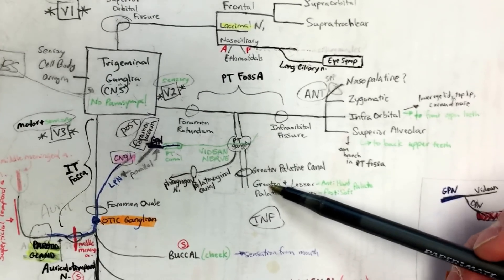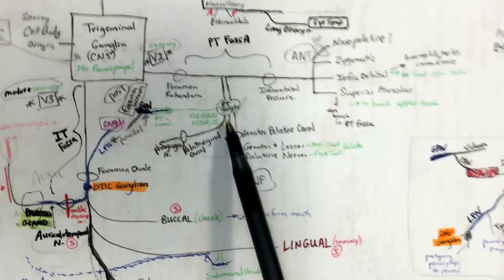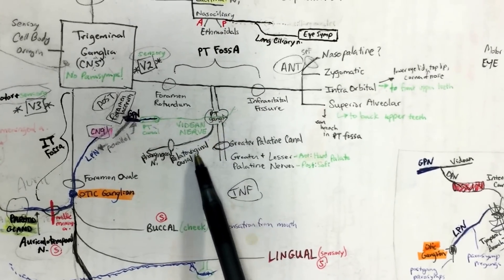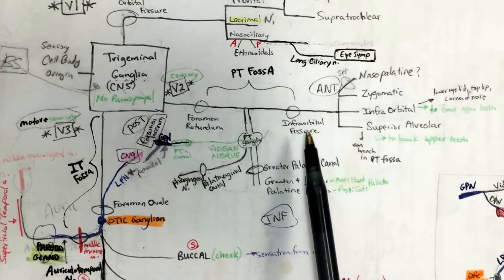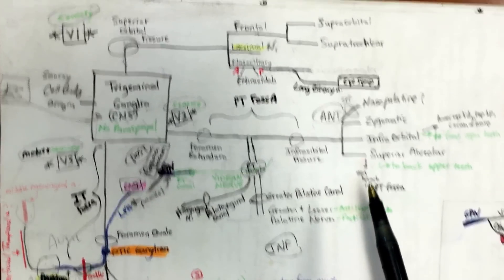Another thing you can add from the chicken bucket to remember is that you're going to have fibers that go through the palatovaginal canal, and that's the pharyngeal nerve. So that kind of ties everything in the chicken bucket there. And for the most part, that's V2.